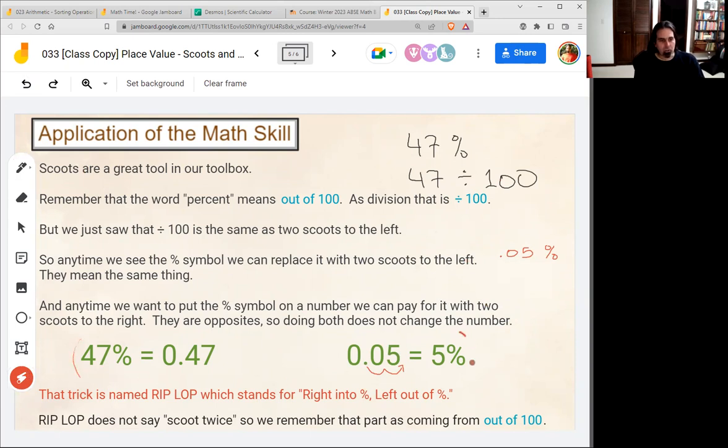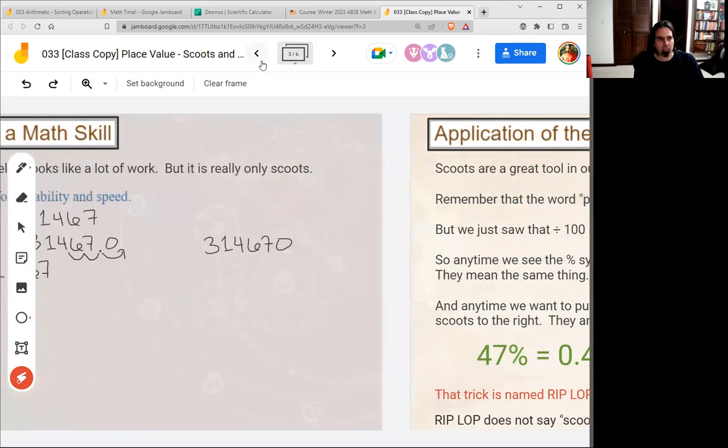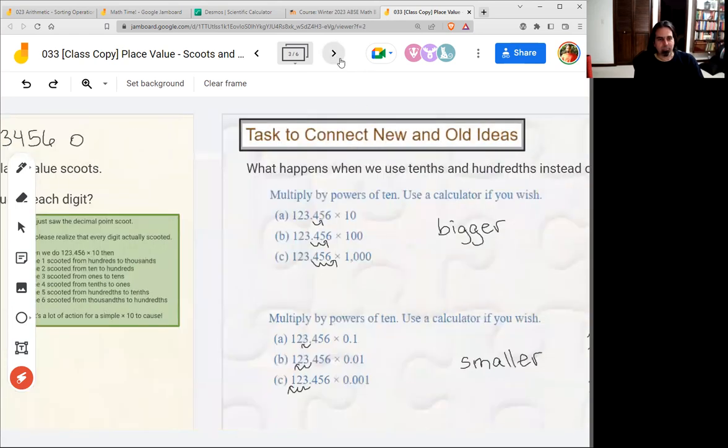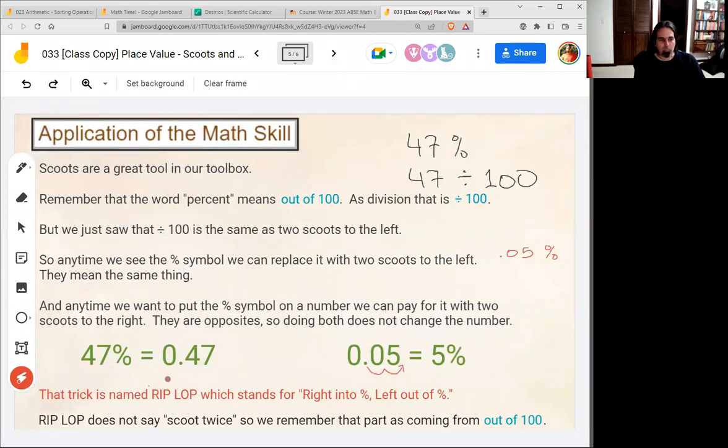So this trick we just saw, you can go out of percent format with two scoots to the left, or you could go into percent format with two scoots to the right. We abbreviate RIP-LOP, which stands for right into percent, left out of percent. And RIP-LOP doesn't say scoot twice. We just have to remember it's twice. But it's always twice because percent always means out of 100. And 100 always meant two scoots to the left, two zeros.